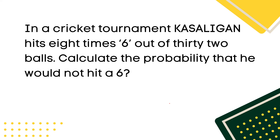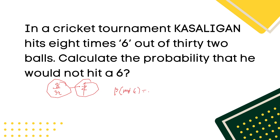Example 4: In a cricket tournament, Kasiligan hits 6 out of 32 balls. Calculate the probability that it would not hit 6. The probability of hitting 6 is 8 over 32, which equals 1/4. Since the question asks for the probability of not hitting 6, the probability of not 6 is equal to 1 minus 1/4, which equals 3/4. That is the answer for problem number 4.